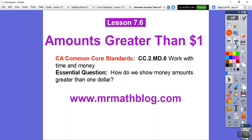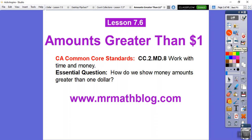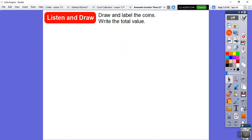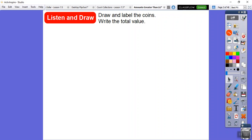Here's our common core strand here. So we're still working with time and money. In this lesson, we're still working with money. Our question here is how can we show money amounts greater than $1? So we're going to draw and label the coins and write the total value.